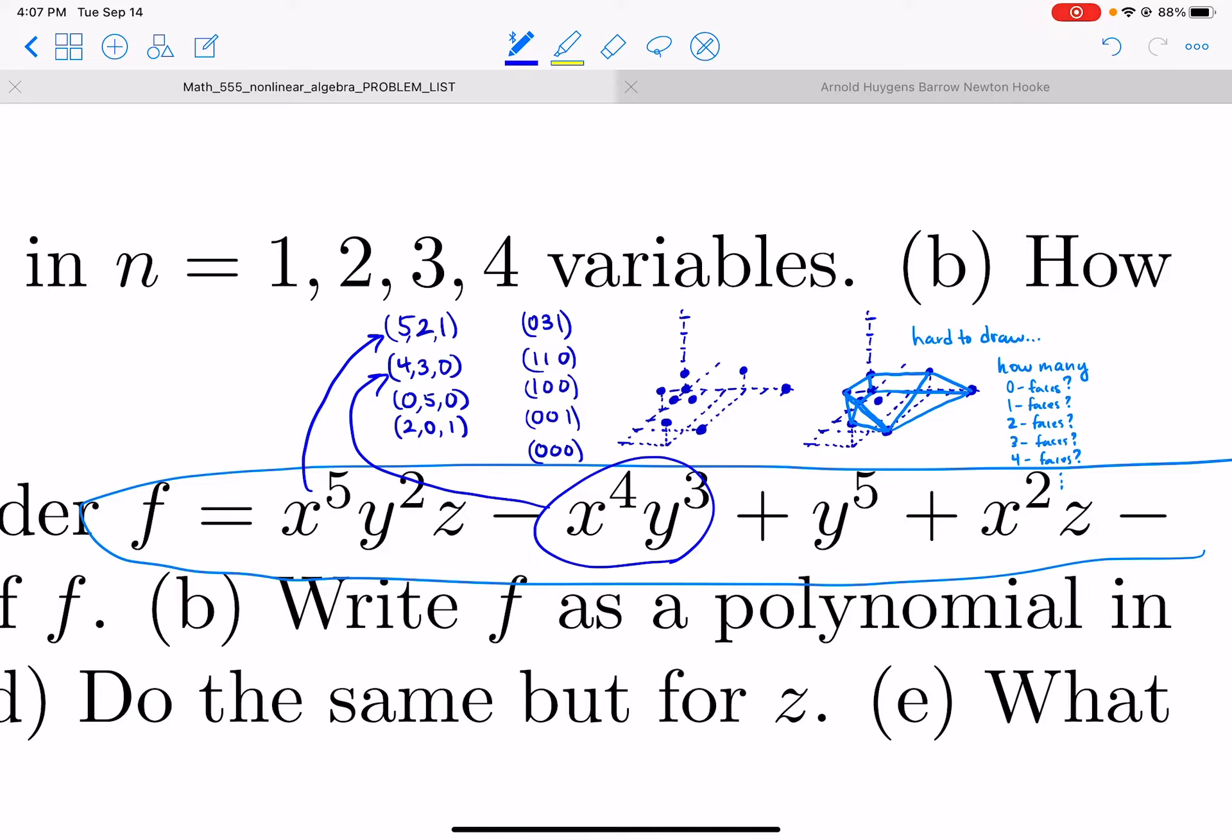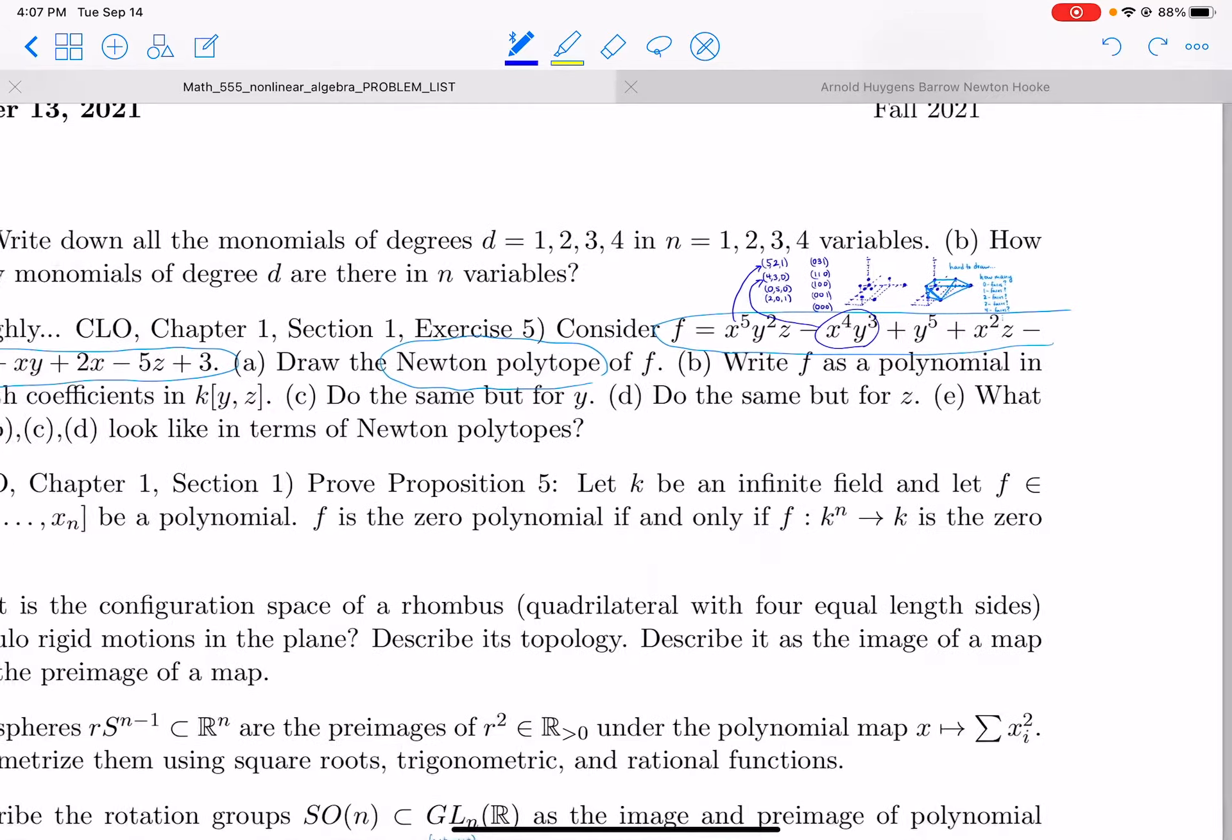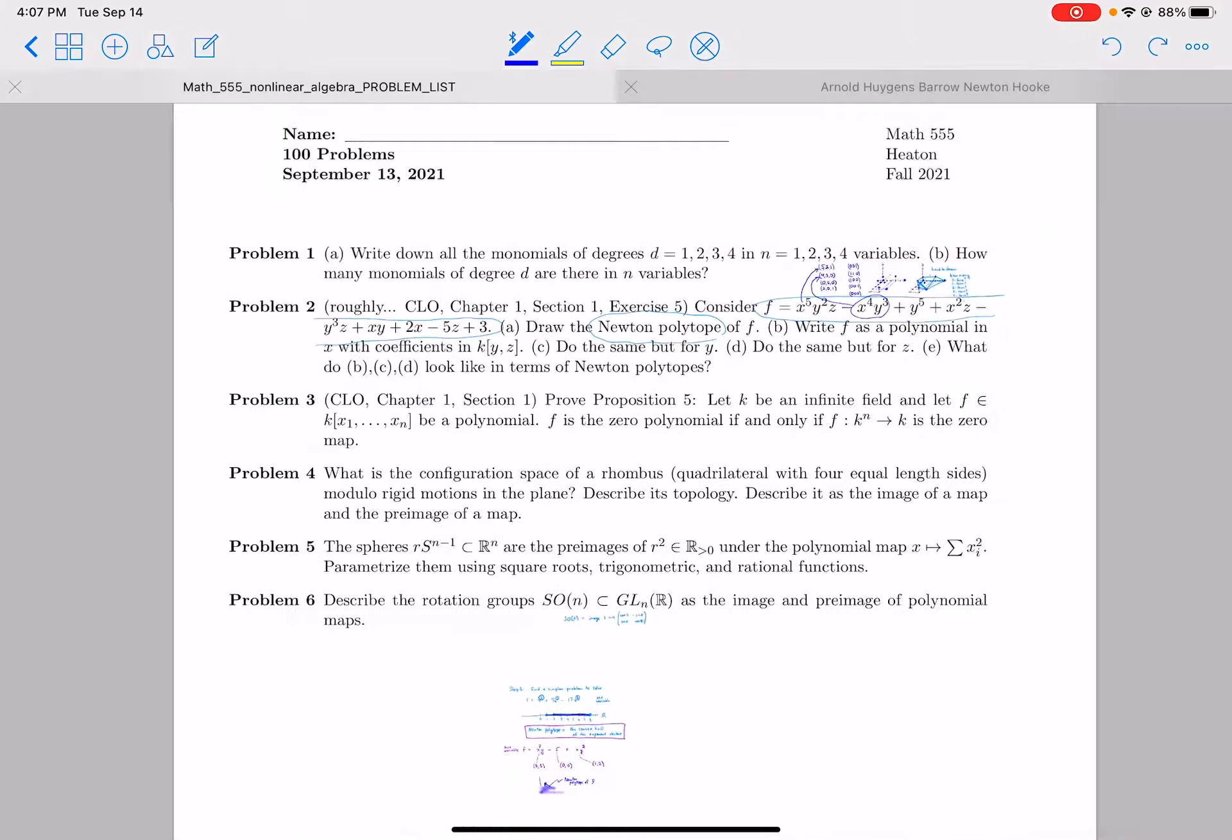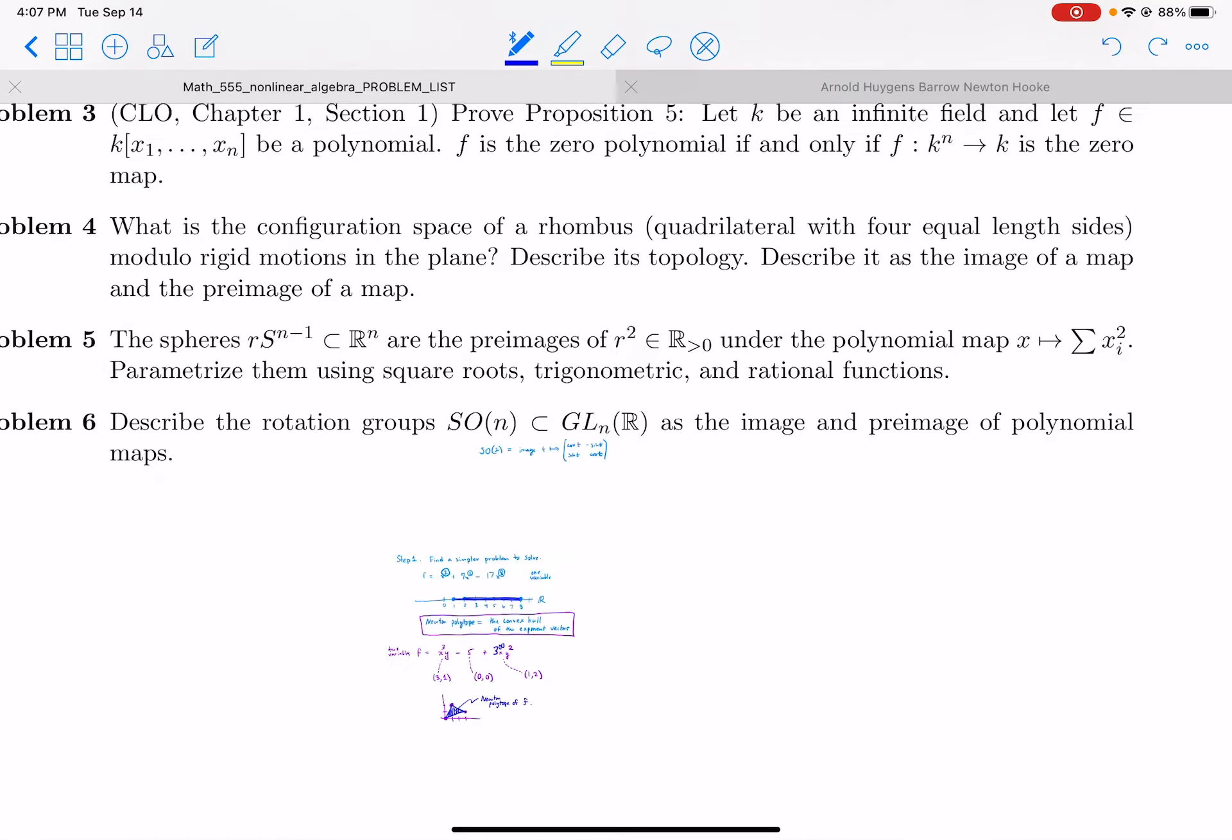Notice that the Newton polytope completely ignores the coefficients. So like this minus sign and this plus sign are the same from the Newton polytope's point of view because it doesn't even pay attention to them. Similarly, it ignored this five and this one and this one. I could put a three there and this is the same Newton polytope.